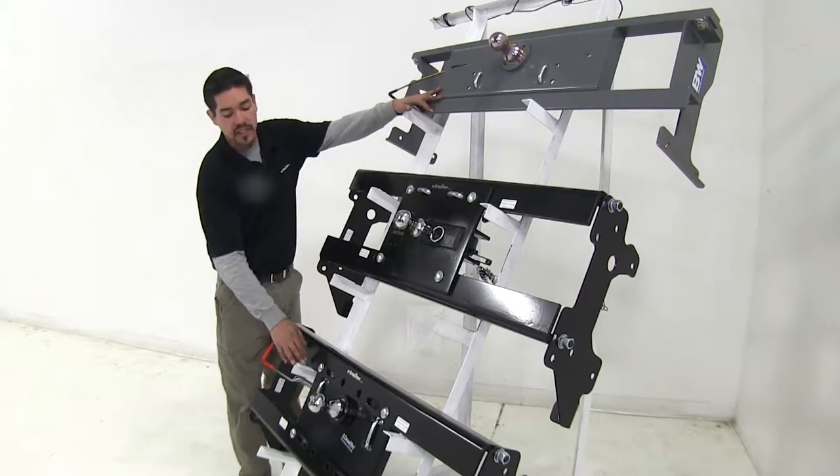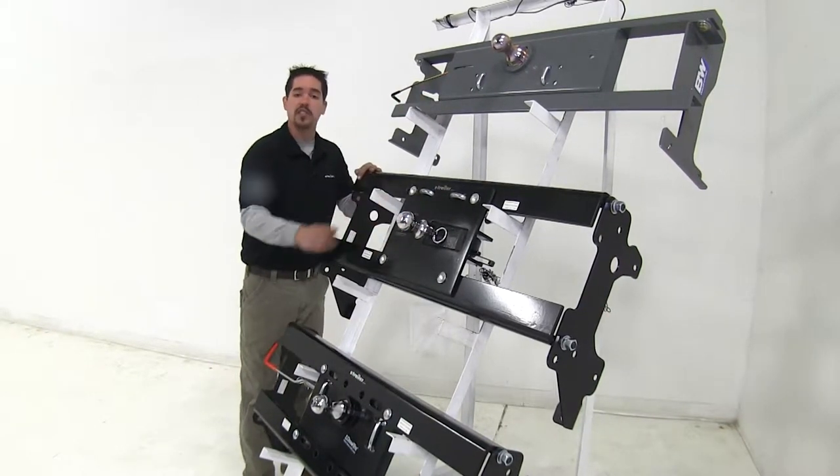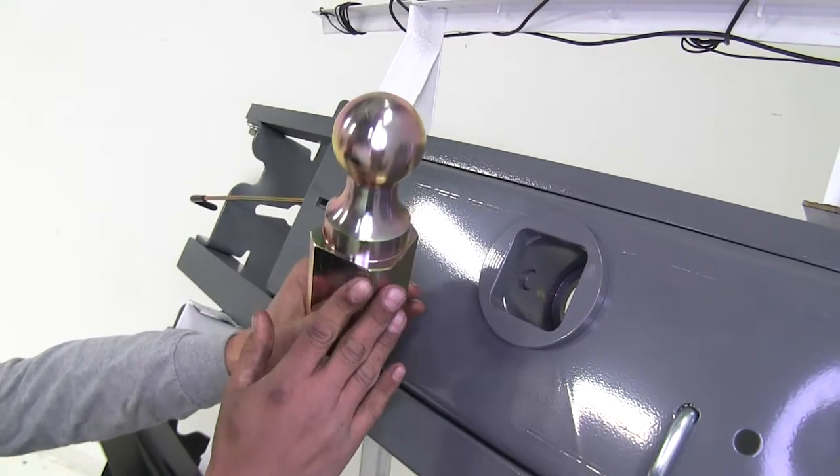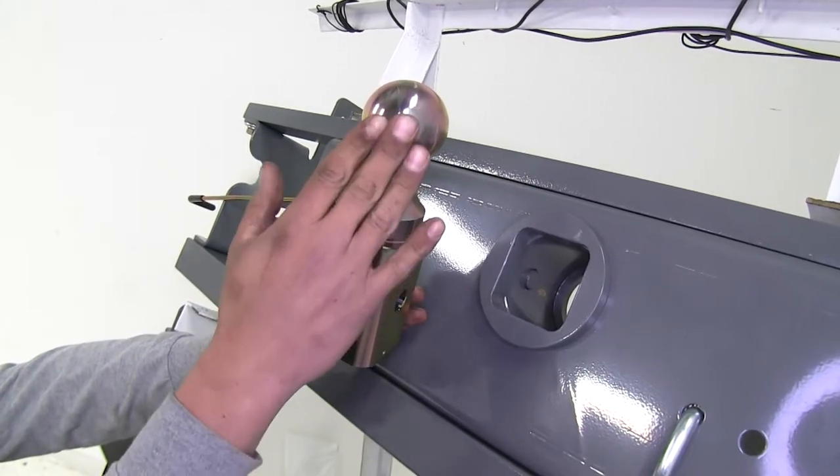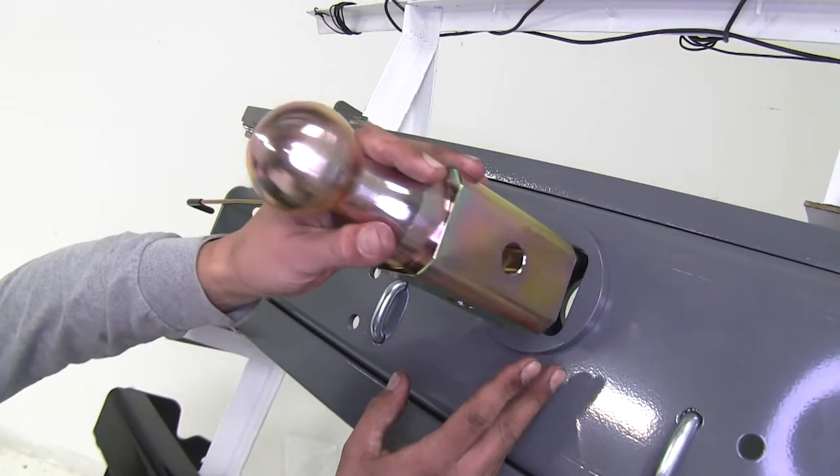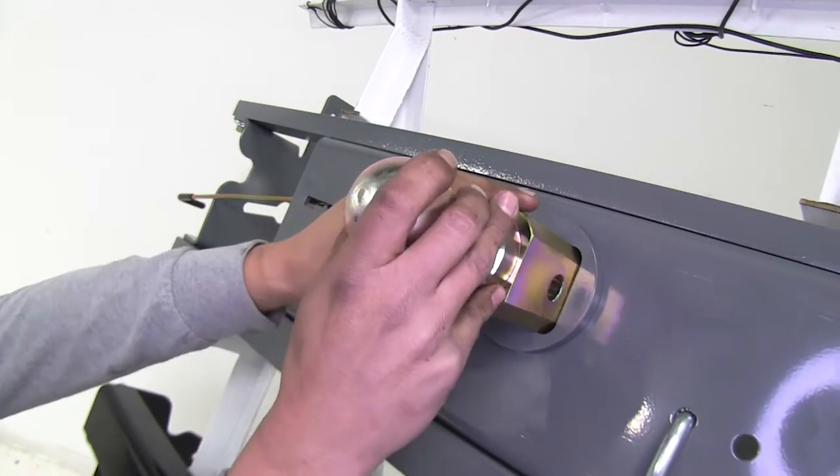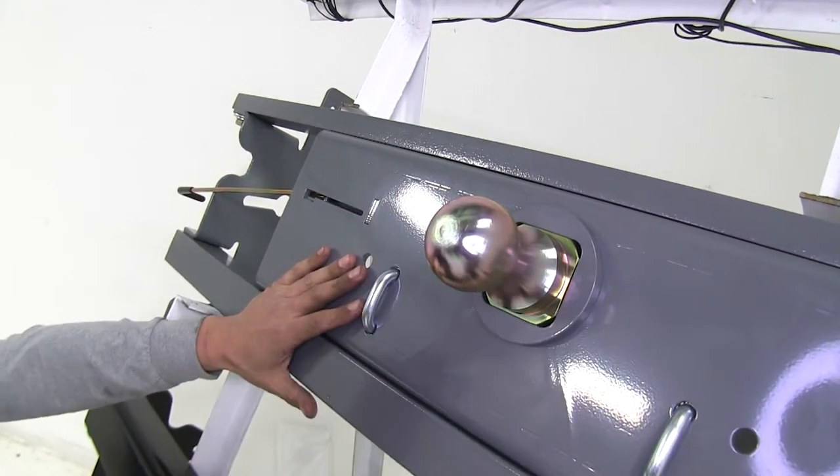Now each one of our goosenecks does feature a two and five sixteenths ball but they all have slight differences to them. The B&W turnover ball here, the nice thing about this is the finish looks a little bit different than a standard chrome ball and that's because it's anodized. And as you can see it has a square shank which is going to help reduce all the rattle and noise and it's also going to make sure that when you're hooking up to your trailer it's not going to turn when you're going to hook up.